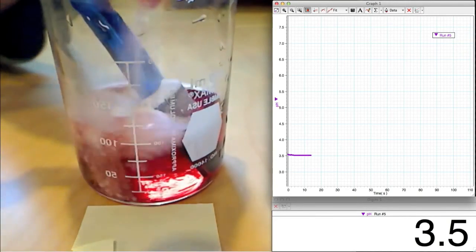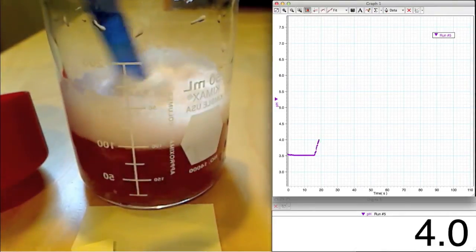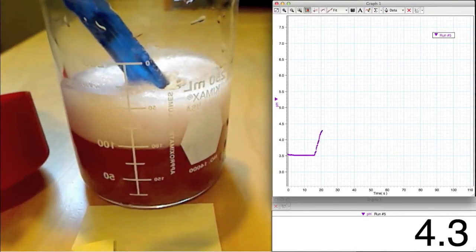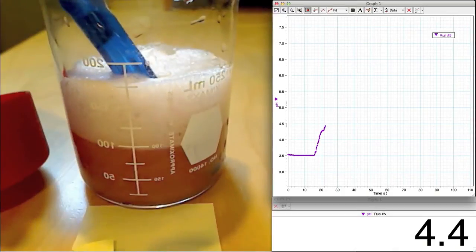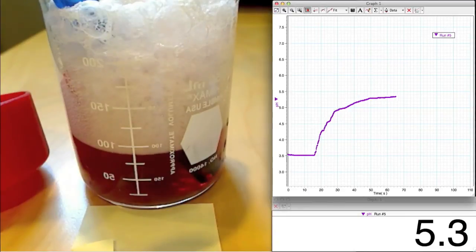One thing you will notice when the powder is added to the juice is that the pH changes much more rapidly than before. If we follow this reaction all the way to the end as we did before,